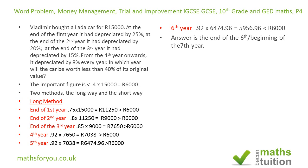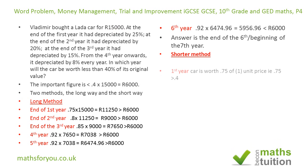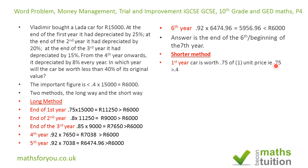Now for the shorter method: if we say that 15,000 is one unit price, then at the end of the first year it will be worth 0.75 of the unit price, which is 0.75 — and that's greater than 0.4, so we move on to the second year.